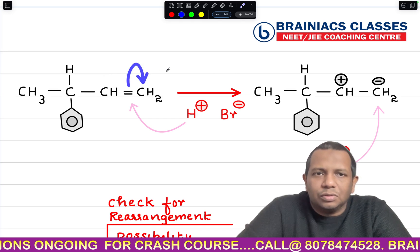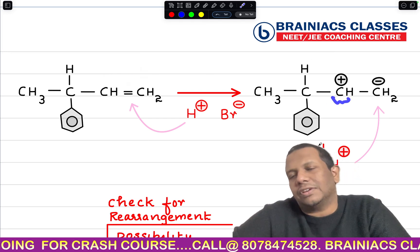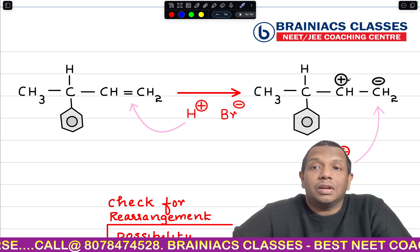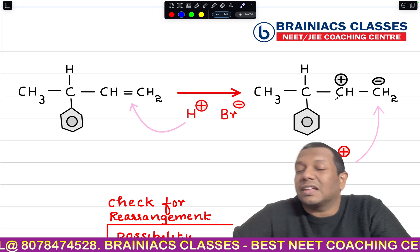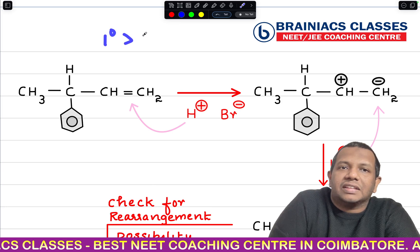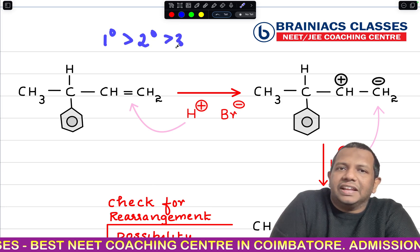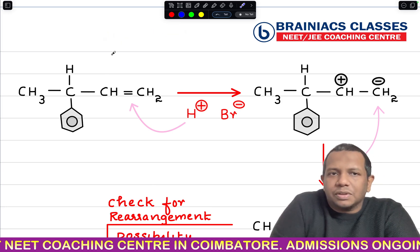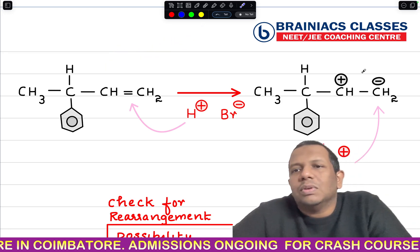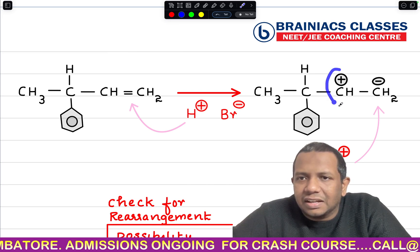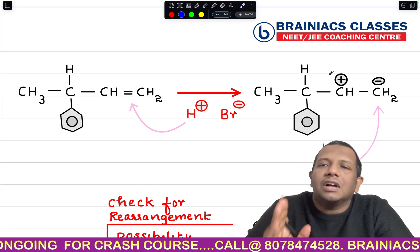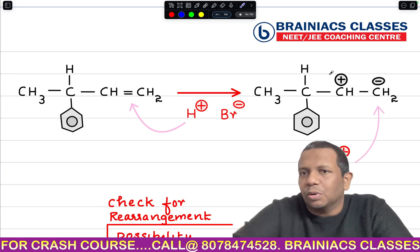If it polarizes in this direction, you will get a secondary carbocation connected to two other carbon atoms. Some students may ask whether polarizing the other way also gives a secondary carbocation. But we know carbocation stability order is 3° > 2° > 1°, so it will polarize to form a secondary carbocation, which is the intermediate in electrophilic addition reaction.